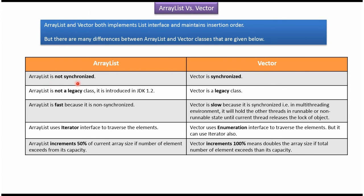ArrayList is not synchronized, but Vector is synchronized. ArrayList is not a legacy class, but Vector is a legacy class. ArrayList is fast because it is non-synchronized, but Vector is slow because it is synchronized.